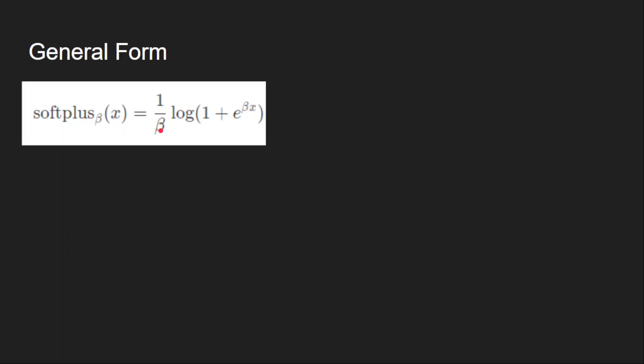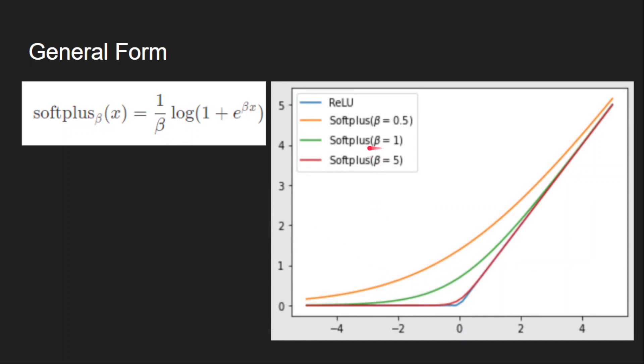Beta is the controlling parameter which controls the slope around zero. By varying this beta we can get different curves like this. Beta equal to one is the actual softplus function, which is this green curve.